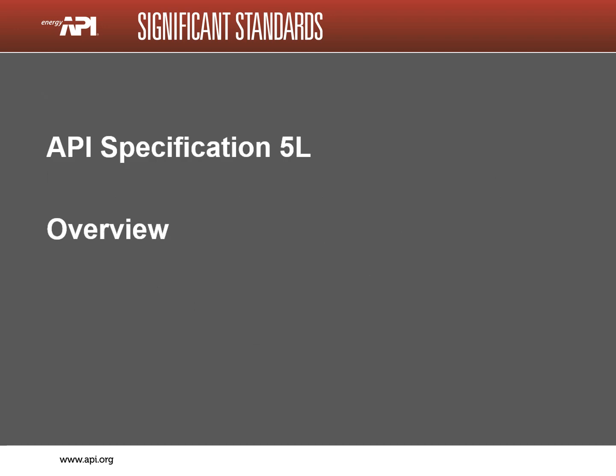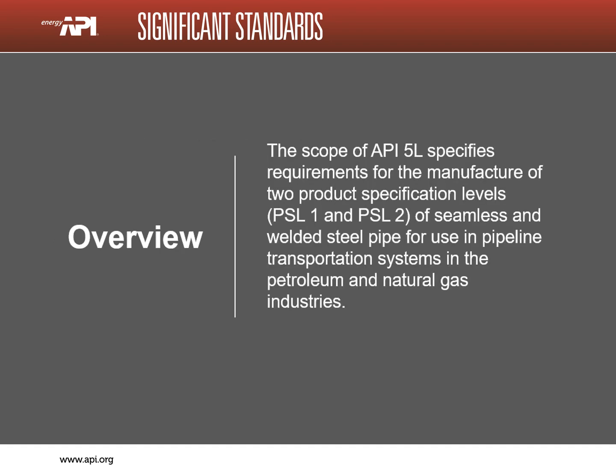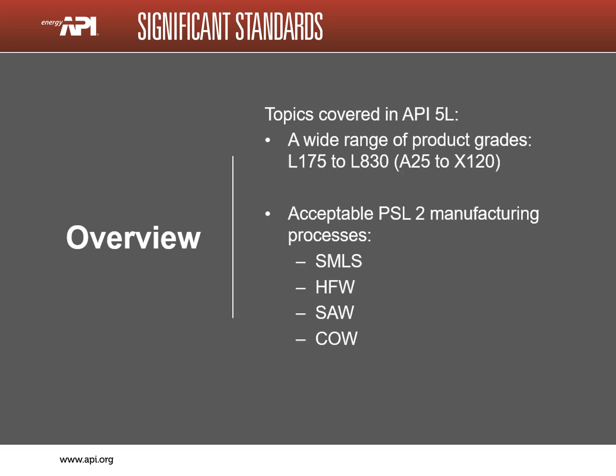The scope of the document is to specify the requirements for manufacturing two product specification levels, PSL 1 and PSL 2, in seamless or welded pipe for use in pipeline transportation systems in the petroleum and natural gas industries. API 5L covers pipe grades A25 to X120, where the number associated with the grade is the approximate yield strength of the product in 1,000 pounds per square inch. A25 would indicate a yield strength of approximately 25,000 pounds per square inch. The actual test pressure due to rounding from SI units is 25,400 pounds per square inch.